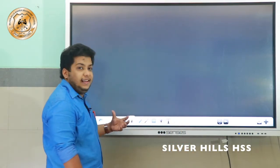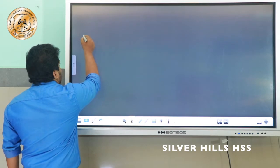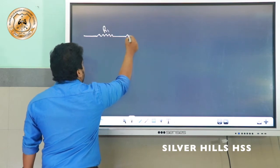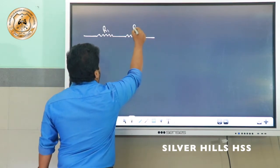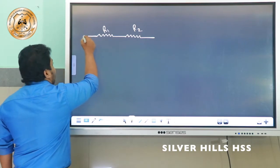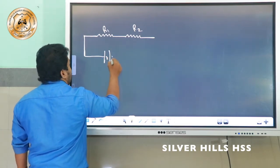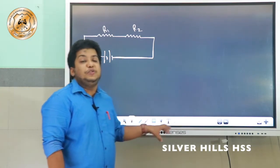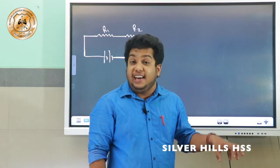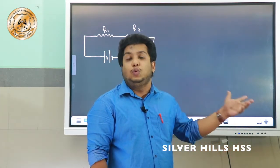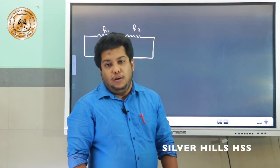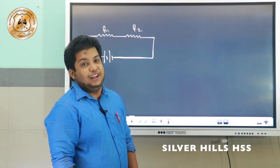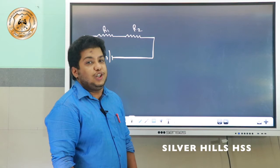First of all we have to consider series combination. Let us consider two resistors R1 and R2. These resistors R1 and R2 are connected in series combination. Now we are going to find the equation to find effective resistance of R1 and R2. We know that in series combination the current remains same.